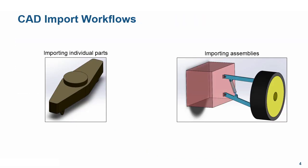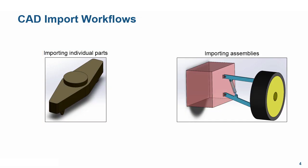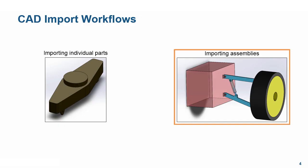There are two CAD import workflows that could be of interest to us. First, importing individual parts — where we already have a SimMechanics model and would like to import an individual CAD part to enhance our existing model. Second, importing assemblies, where we import the entire assembly from the CAD software, including degrees of freedom, inertia properties, etc.